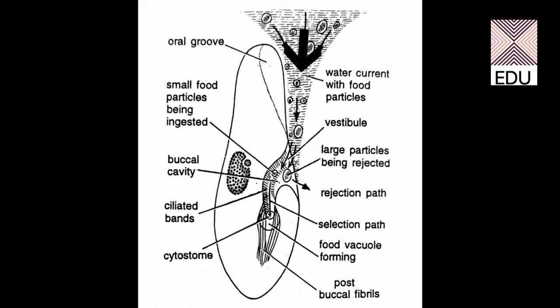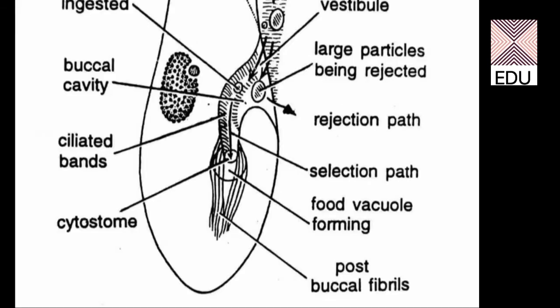The path on which the food enters the oral groove is called the ception path. The cilia present inside the oral groove take the food into the next part, which is the buccal cavity. The oral groove has ciliated bands which perform ciliary action. With this, the food is further taken inside and finally reaches the cytostome.